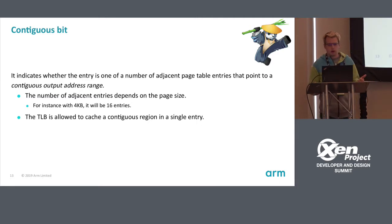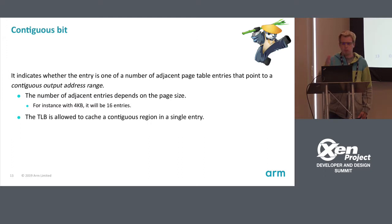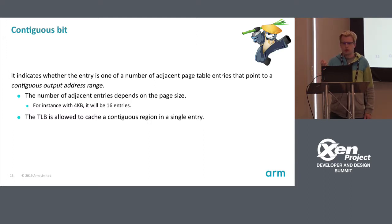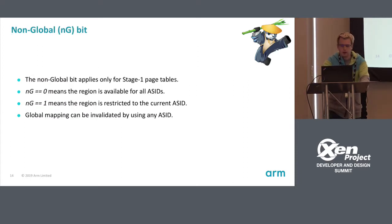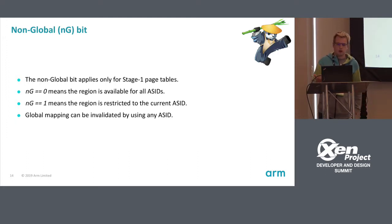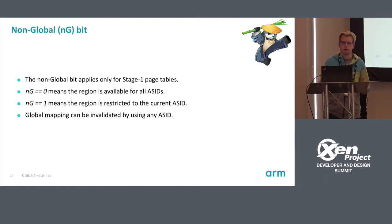Some people want larger mappings than a single block or page entry — that's what the contiguous bit is for. It indicates that one or multiple adjacent entries map to a contiguous output address range. For 4 KB granule, you can have 16 contiguous entries, and the TLB only needs to cache one entry instead of 16, relieving pressure on the TLB. The non-global bit lets you say a region is available for all ASIDs — useful for kernel mappings that are the same in every page table.